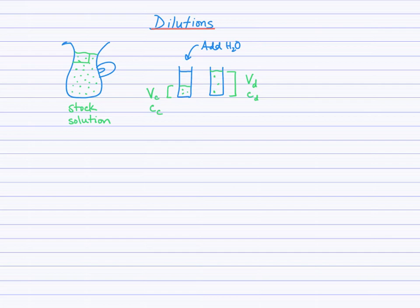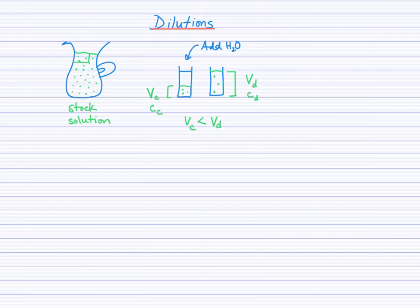So which is greater, VC or VD? VC is the volume of the concentrated solution that we initially put in the glass, and VD is the volume of the new prepared diluted solution. The volume of the diluted solution is greater than the volume of the concentrated solution. We've used a smaller volume of the stock solution, added water, and now we have a larger volume.